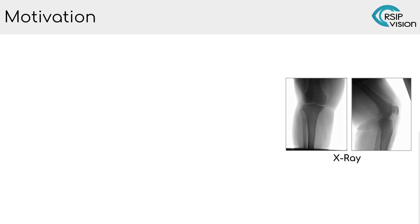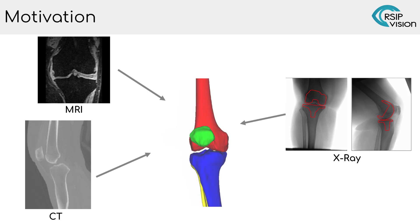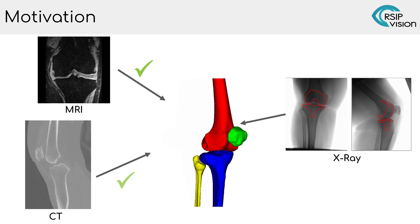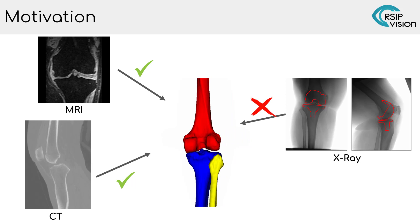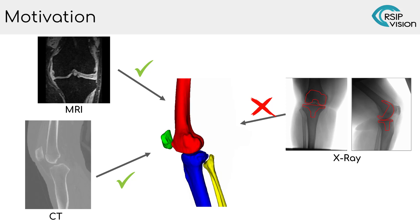X-ray is the most common modality for knee replacement preoperative planning. In contrast to other less common modalities like MRI and CT, it does not allow 3D model extraction, resulting in less accurate planning. That's why 3D joint reconstruction from 2D X-ray images is so important.